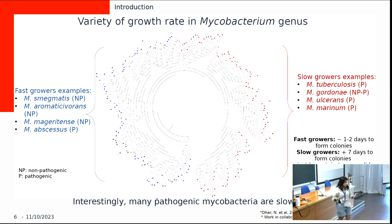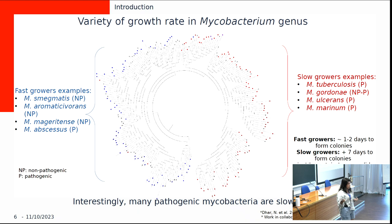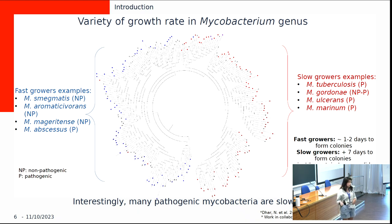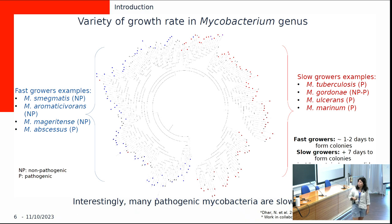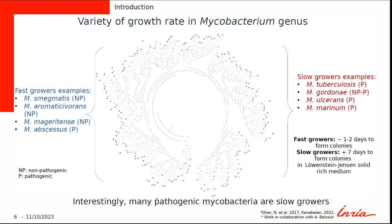How do they define fast and slow growers? This has been done for about 100 years: whenever they find a new mycobacterium, they plate it on LJ complex media — a rich media — let it grow, and see how long it takes to form colonies. If it takes longer than seven days, it's considered a slow grower; if less, a fast grower. This LJ media, which has egg and potato starch, was developed in the 1800s and is still used for clinical diagnosis and isolation.